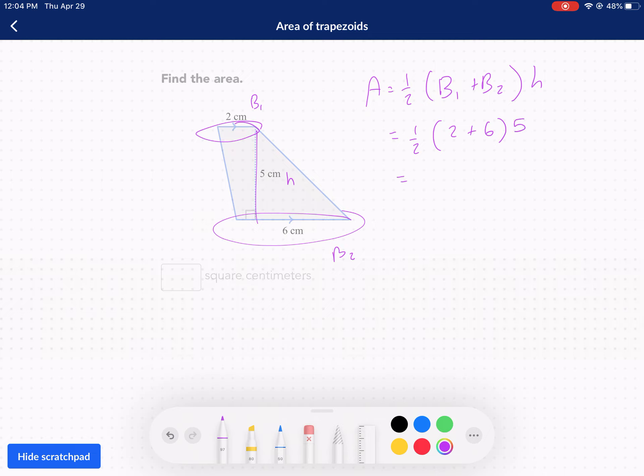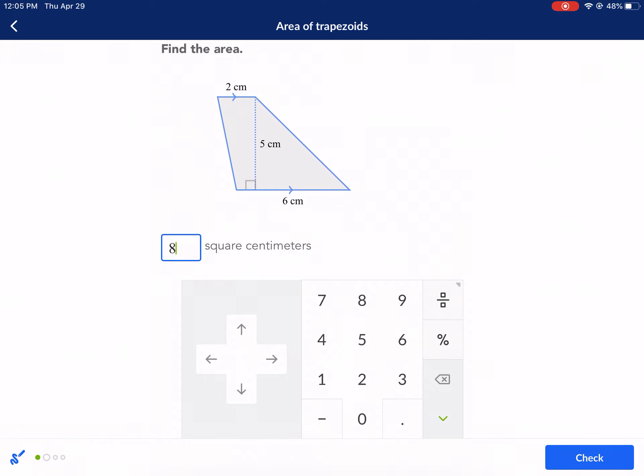This time I'm not going to do one half times five. I'm going to wait to add two plus six first. So I have one half times eight times five. So then I'm going to have four times five. And this is just a way to show how to do it quickly in your head if you don't have a calculator at your time.